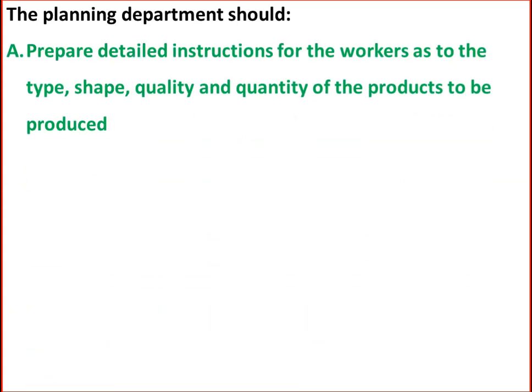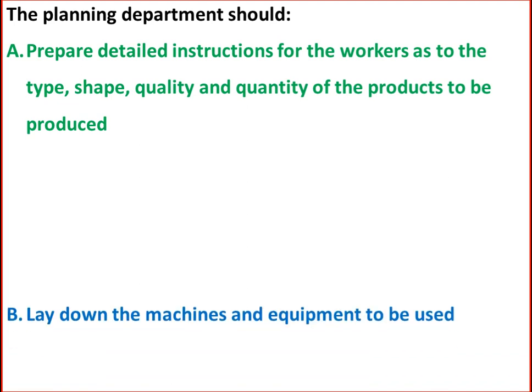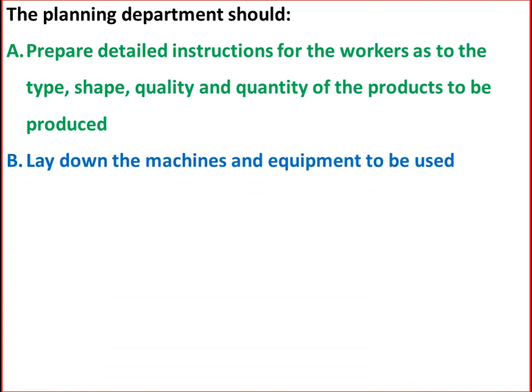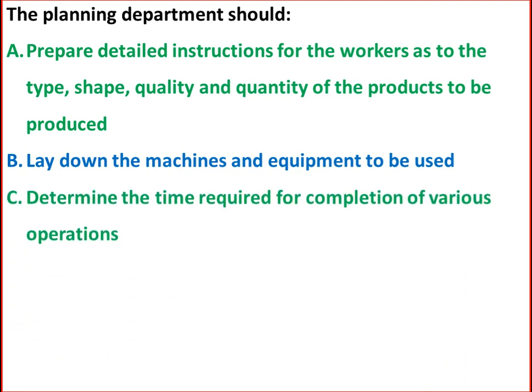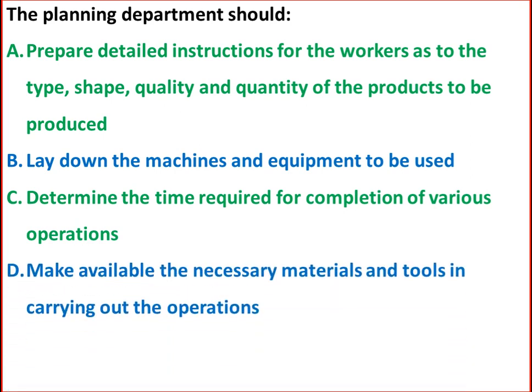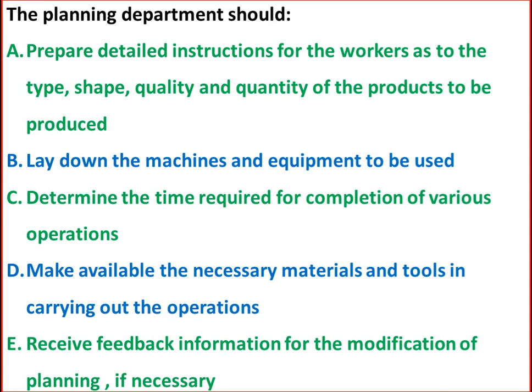The planning department should prepare detailed instructions for workers as to the type, shape, quality and quantity of products to be produced. They should also lay down the machines and equipment to be used, determine the time required for completion of various operations, make available necessary materials and tools, and receive feedback information for modification of planning if necessary.